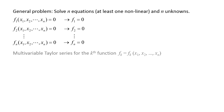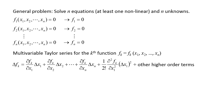We now examine the multivariable Taylor series for the k-th function, called fk, where k is some number in the range 1 to n. A change in fk, labeled as delta fk, is equal to the partial derivative of fk with respect to x1 times delta x1, plus the partial derivative of fk with respect to x2 times delta x2, and so on until we reach the partial derivative of fk with respect to xn times delta xn.